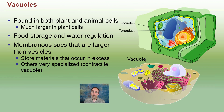In plant cells, and also in animal cells — which is often not regarded — there are vacuoles. They are found in both. They're for food storage and water regulation. The membranous sacs are larger than a small vesicle; they store materials that are in excess and can be very specialized. In plant cells they are quite large and pronounced, while in animal cells they tend to be quite smaller.